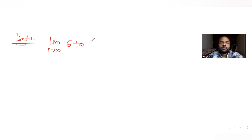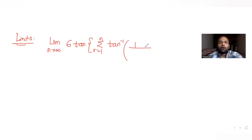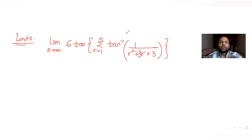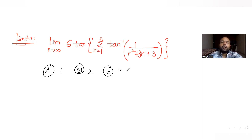The expression given to us is 6 tan of the summation of r equal to 1 to n of tan inverse of 1 upon r squared plus 3r plus 3. There are four options given as the possible value: 1, 2, 3, and 6. We need to figure out which one is the correct answer.